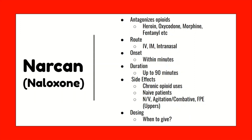Now let's go into the signs and symptoms of an opioid overdose. Alterations in respiratory drive and mentation are common, including signs of poor perfusion and oxygenation, specifically cyanosis. But one key sign that you will see is pinpoint pupils. So get in the habit of assessing your patient's pupils, especially those who are altered, comatose, or showing signs of ineffective breathing.